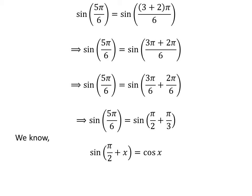We know the famous trigonometry identity: sine of half of pi plus x is equal to cosine of x. The proof of this identity has been explained in the video appearing in the upper right corner, and the link is also given in the description. Applying this identity gives us sine of 5 times pi upon 6 is equal to cosine of pi upon 3.